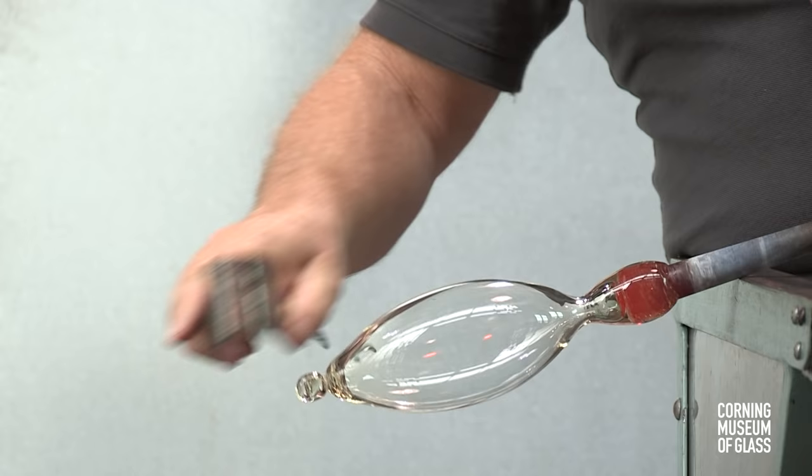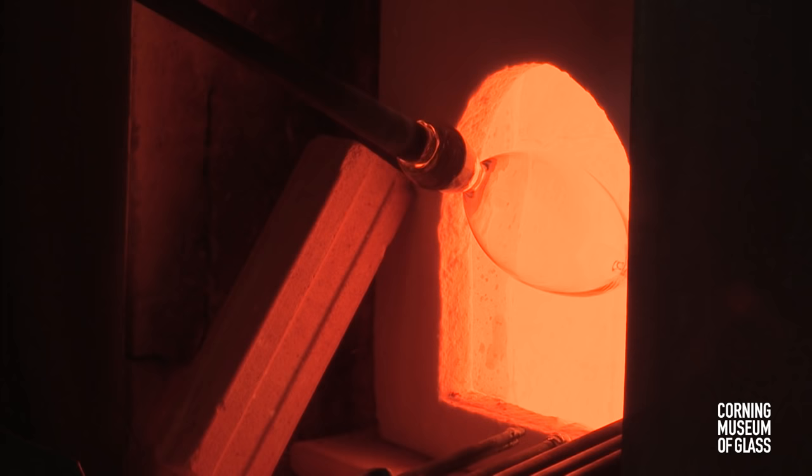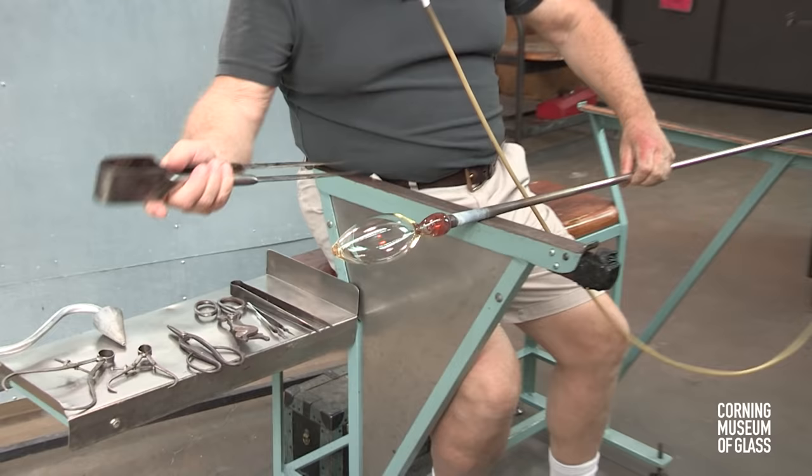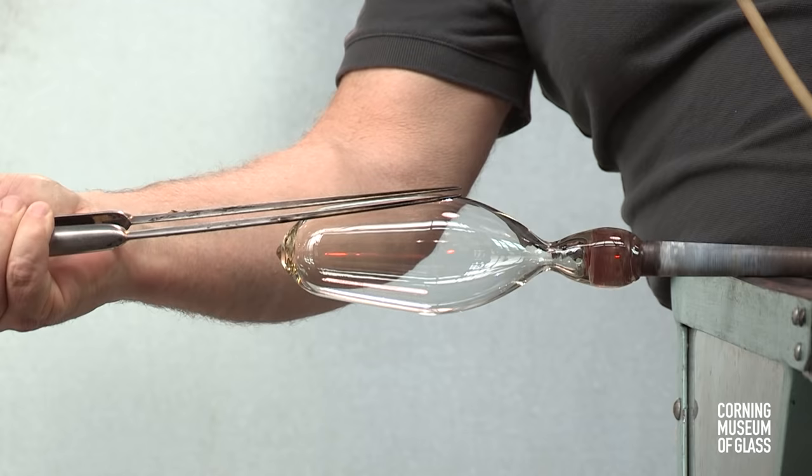The tip is trimmed, and the lower half of the bubble is reheated to soften the glass to allow it to be given its final shape. This vessel will have a slightly conical taper.